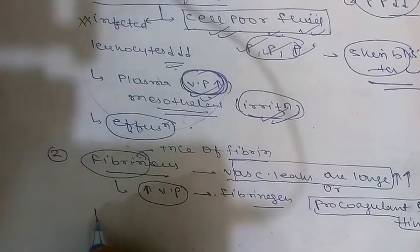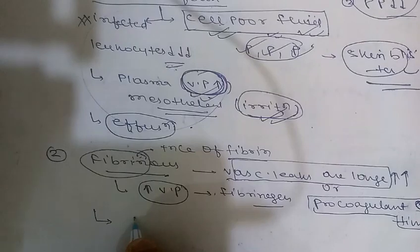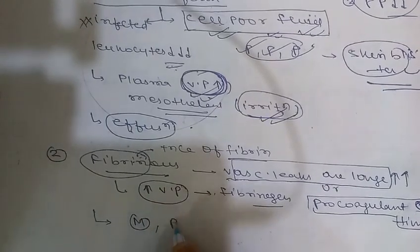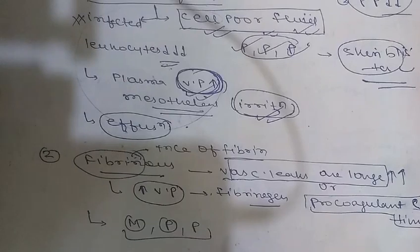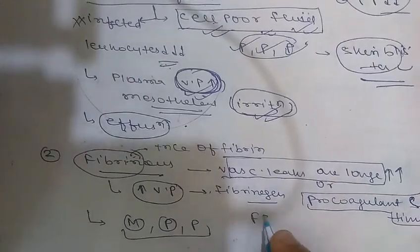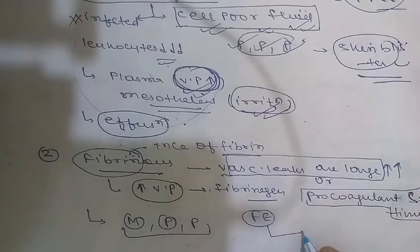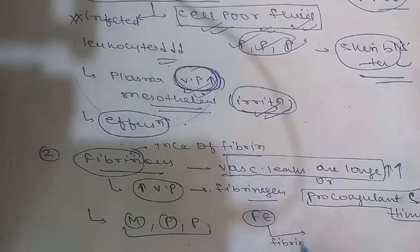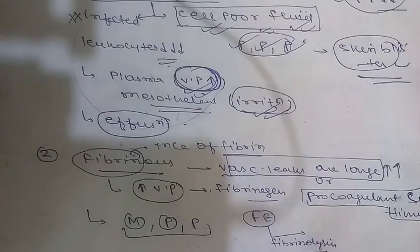Fibrinous exudate is characteristic of inflammation in the lining of body cavities such as the meninges, pericardium, and pleura. The fibrinous exudate deposited into these cavities may be dissolved by fibrinolysins and cleared by macrophages.